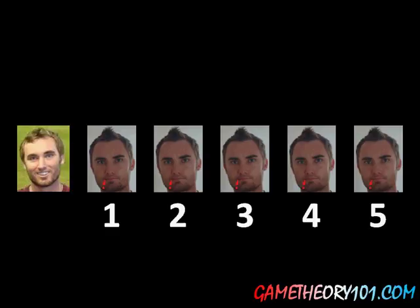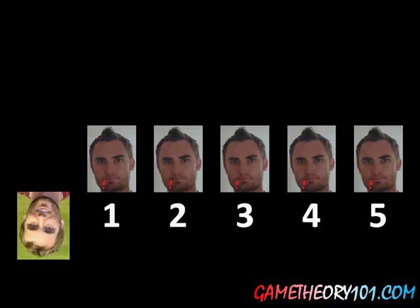With five cannibals: cannibal 5 is last to act and eats cannibal 4. This causes cannibal 4 not to eat cannibal 3, knowing he'd die. Cannibal 3, knowing cannibal 4 won't eat him, wants to eat cannibal 2. Cannibal 2, knowing cannibal 3 will eat him, doesn't want to eat cannibal 1. That allows cannibal 1 to eat the tourist, knowing cannibal 2 won't kill him afterward — so the tourist dies.